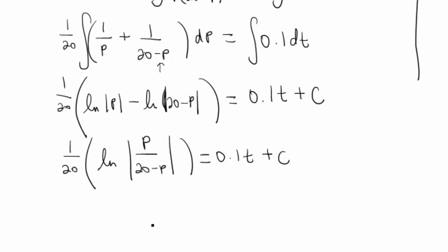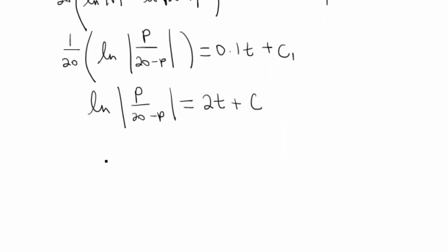I'm trying to solve for p here. Let's go ahead and multiply both sides by 20. So we multiply 20 by 0.1, and I'm going to get 2t. Remember, c can just absorb it, so we'll just keep calling it c. Now we need to undo our natural log function, so that's going to be with our e. We're going to have the absolute value of p over 20 minus p equals e to the 2t plus c.